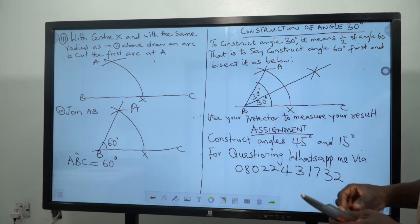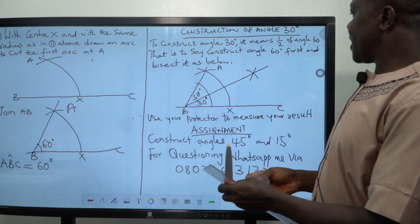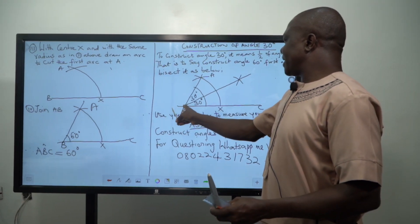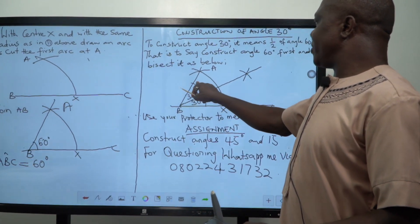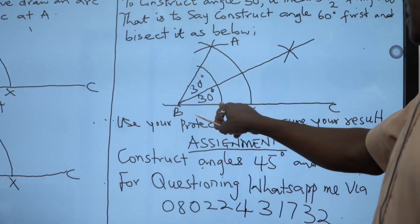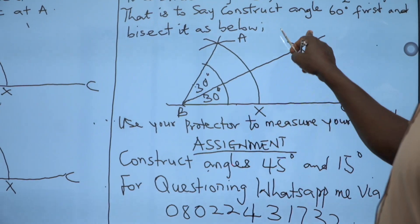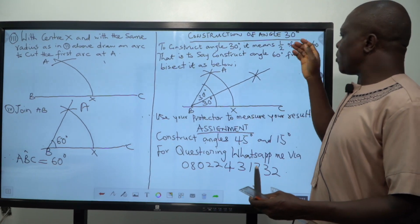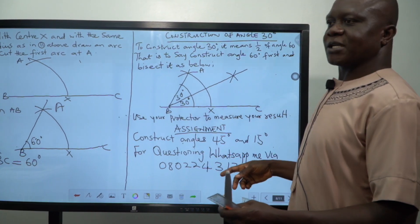So if you follow the rules or the steps we used in construction of angle 60, thereafter for you to bisect the angle 60, what you will do is that you will place the pointed end of this your pair of compass here and allow the pencil to touch this line. And you move, you make this arc here. You place it back again, you make this arc. You place it back again here, you make this arc.